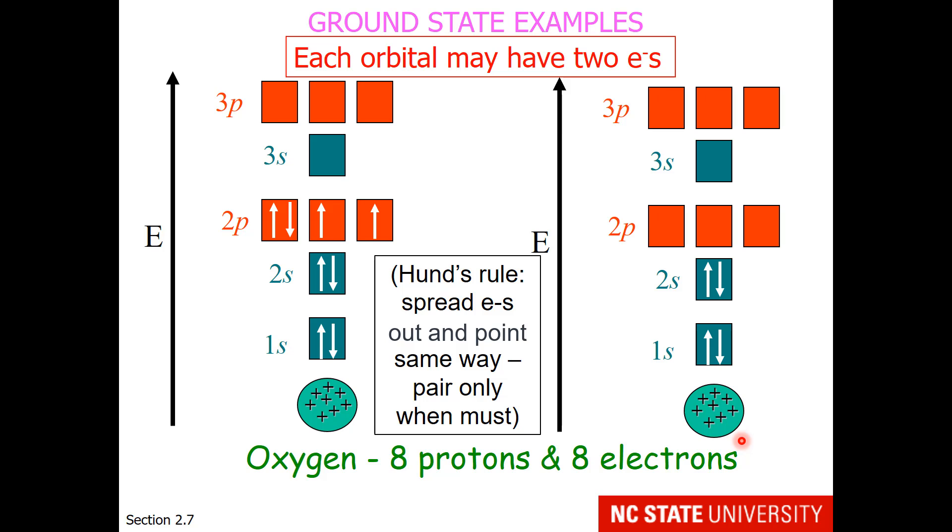I could put 1, 2, 3, 4 in the lowest energy, and this time I could start with my electron pointed downward in the 2p orbital. So that would be electron five, six, seven, and this time I could put the upward electron in the middle orbital. This is also oxygen's ground state representation.